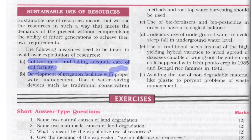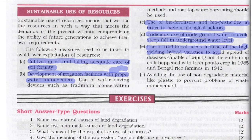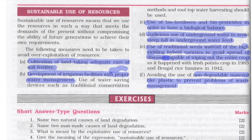Additional sustainable use measures include: development of irrigation facilities with proper water management; use of water-saving devices like traditional conservation methods and rooftop water harvesting; use of bio-fertilizers and bio-pesticides for biological balance; judicious use of underground water to avoid steep falls in underground water levels; use of traditional seeds instead of high-yielding hybrid varieties to avoid spread of disease capable of wiping out entire crops; and avoiding use of non-degradable materials like plastic to prevent waste management problems. Thank you.